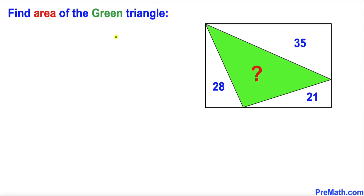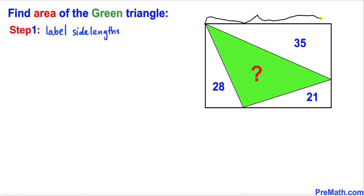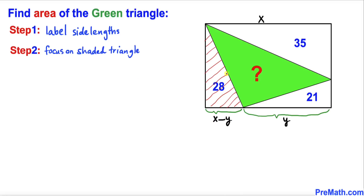Let's get started with the solution. Here's our very first step: let's label the side lengths of this rectangle. I'll label this side length as x and this side length as y, so this side length is going to be simply x minus y.